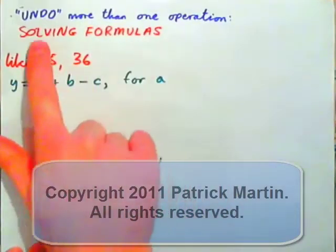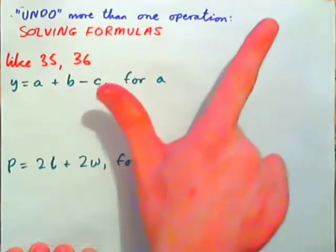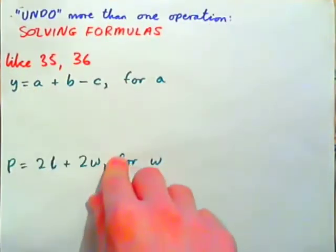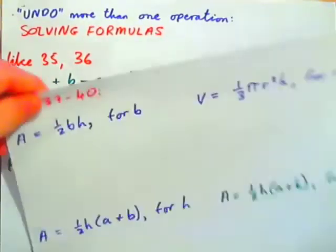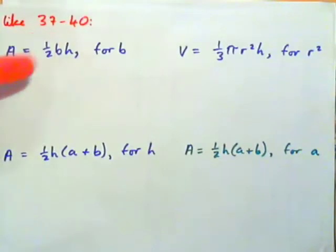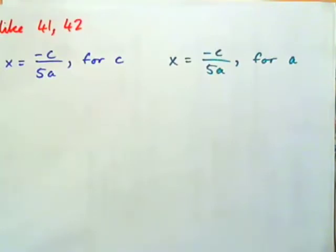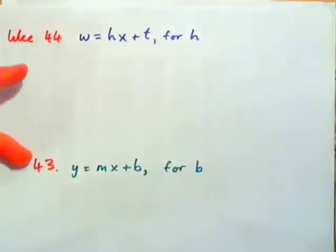Okay, more solving formulas. This time we're going to undo more than one operation, so there may be two operations applied. We're going to have examples like 35 and 36, 37 through 40, 41 and 42, and 44 and 43 in the text. Hopefully I'll be able to show you how to do your homework.